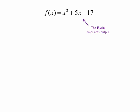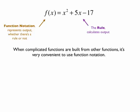The algebraic rule calculates the output, while function notation represents the output whether there's a rule or not — it could be based on a table, a graph, or something we just describe. For example, the function could be your height since you were born, where the input quantity is your age. When complicated functions are built from other functions, it's very convenient to use function notation rather than the rule.